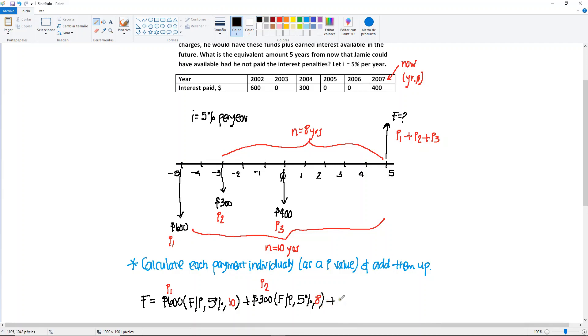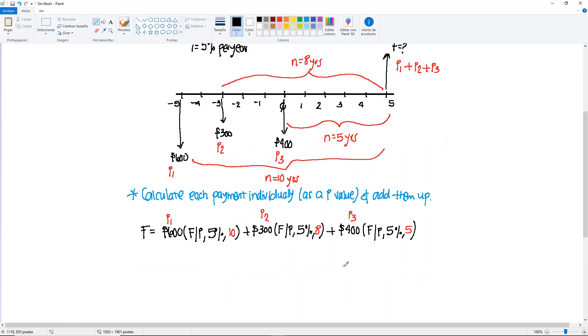And we have one more, which is the 400. 400, find F, given P, also at 5%. And for this one, the distance between here to here, it's going to be N equal to 5 years. So here I'm going to put a 5. And this is my P3. So now I have all three of them. Because it's as if you had three different diagrams. We're putting everything together in one.